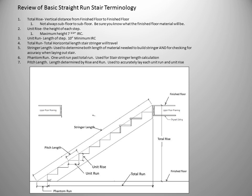To review the basic straight run stair terminology: total rise is the vertical distance from finished floor to finished floor. Unit rise is the height of each step. Unit run is the length of each step, or the tread. Total run is the total horizontal length the stair stringer will travel.